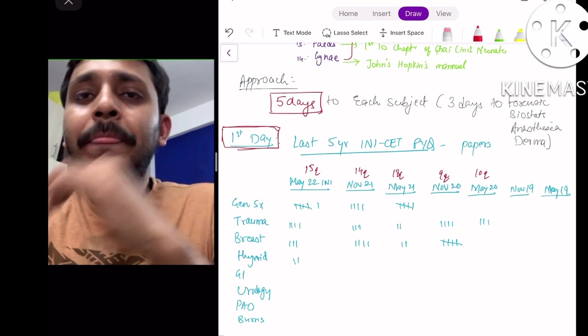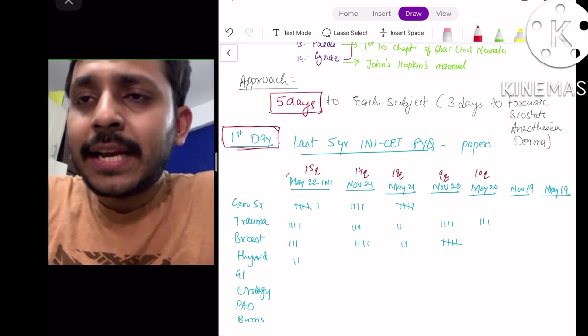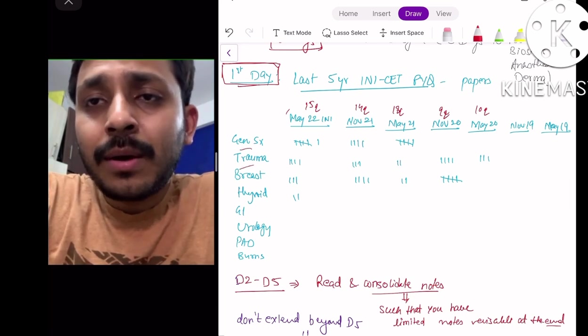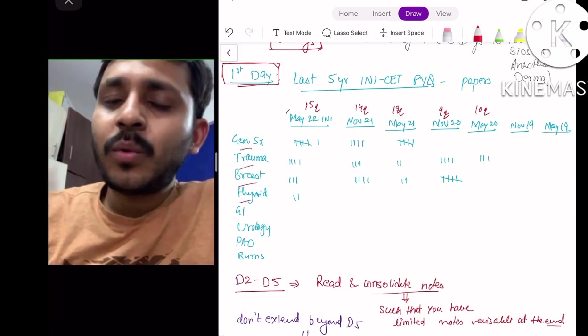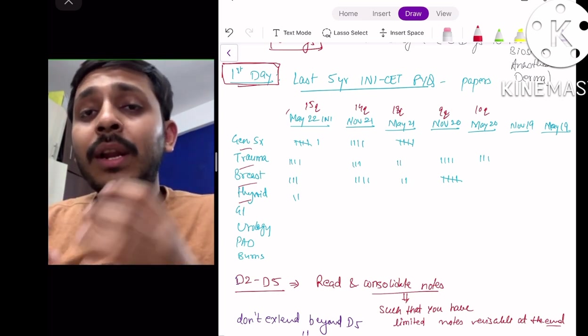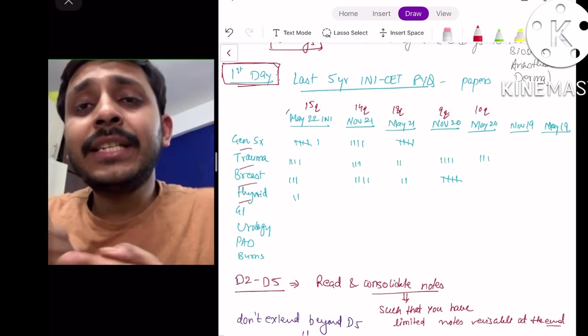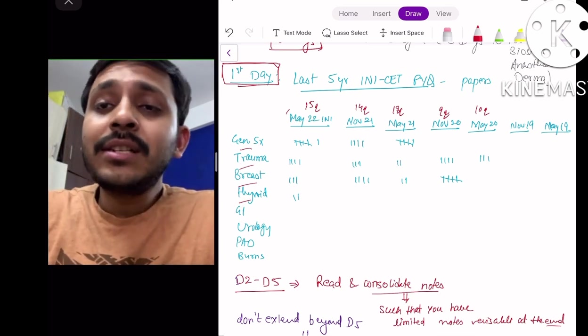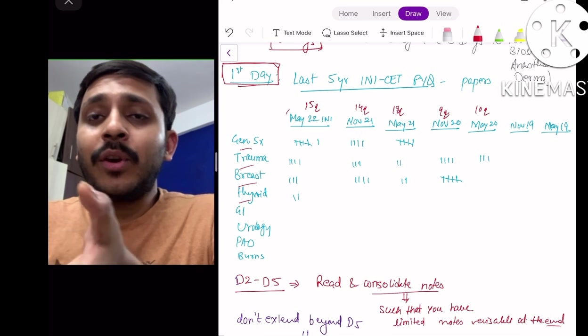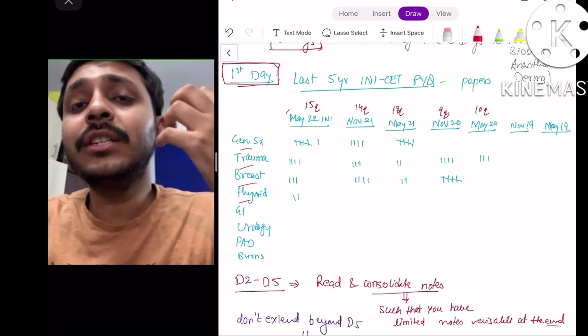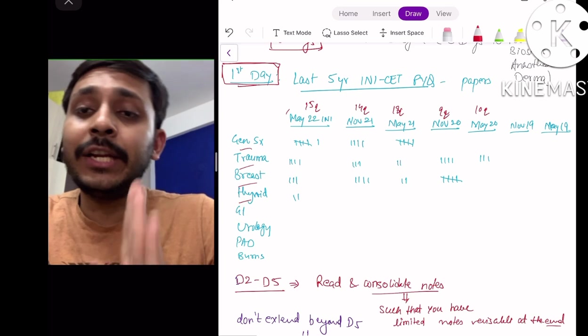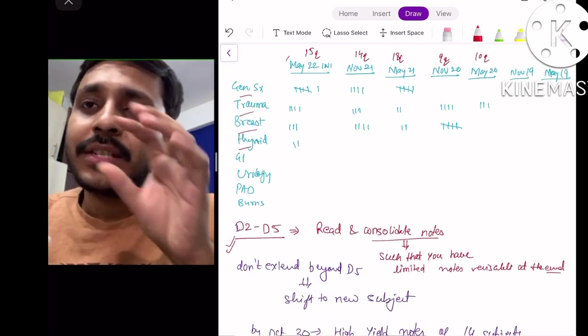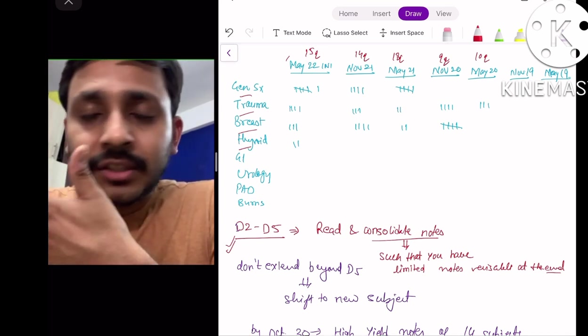For each subject, you make a table that in each INI-CET what were the questions asked in each subject. What I did was I made a table for surgery. In each INI-CET exam I wrote the important topics - let's say general surgery, trauma, breast, thyroid - and while doing previous questions, first the advantage that I got to know what the important topics were, and in each important topic I got to know what was its weightage. As I told you earlier in surgery, general surgery, trauma, breast and thyroid form the bulk of your questions. Hence you'll get to know on the first day itself which are the topics that you need to focus.